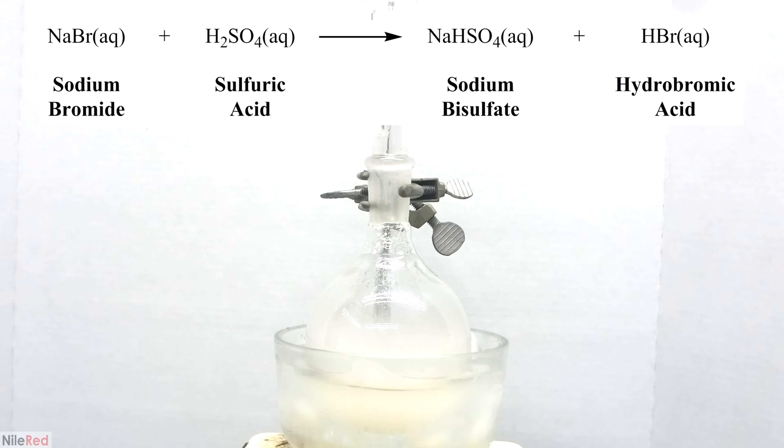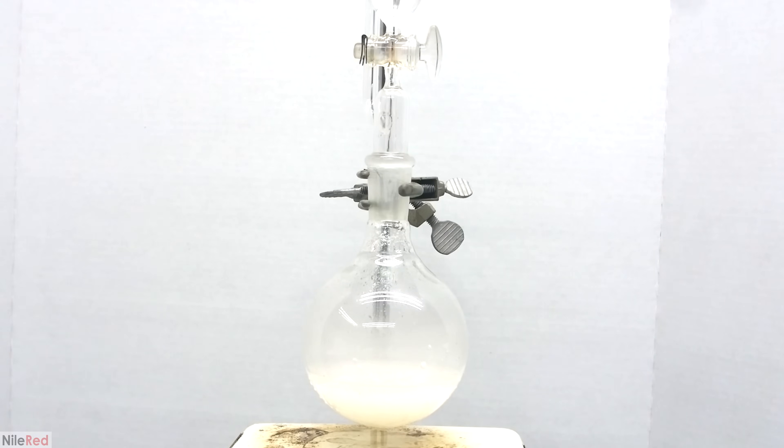When the sulfuric acid is added to the flask, it reacts with the sodium bromide to form sodium bisulfate and hydrobromic acid. Hydrobromic acid is the active reagent that will react with the alcohol to make the bromoalkane. When a reagent is made in the reaction flask itself, instead of being pre-made, it's said to be made in situ, which can be roughly translated to on-site. There are various different reasons why in chemistry you'd want to make a reagent in situ, but here it's just much more time efficient because we don't have to prepare hydrobromic acid in advance.